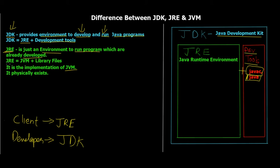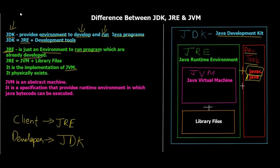JRE is basically just an environment wherein the program runs, and JRE is equal to JVM plus library files. The third term is JVM, which stands for Java Virtual Machine. Let's see what it is.